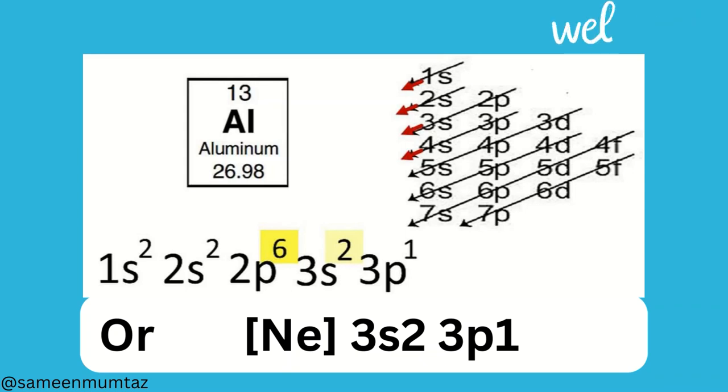Number 3, Aluminum atomic number 13. 1s2 2s2 2p6 3s2 3p1, or Neon plus 3s2 3p1.